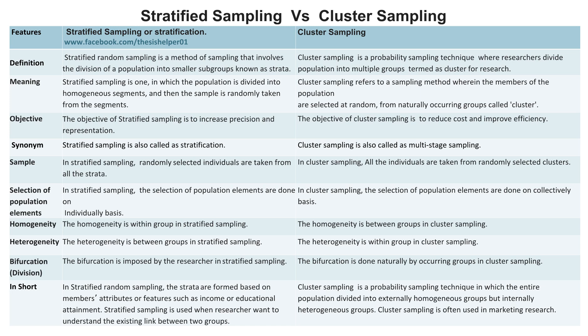The objective of stratified sampling is to increase precision and representation. Whereas, the objective of cluster sampling is to reduce cost and improve efficiency. Stratified sampling is also called stratification, whereas cluster sampling is also called multi-stage sampling.